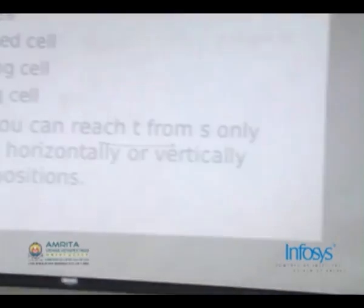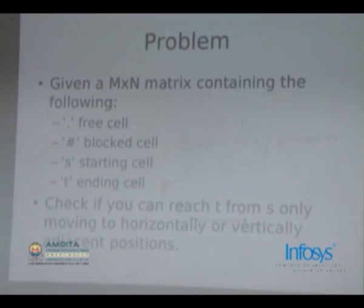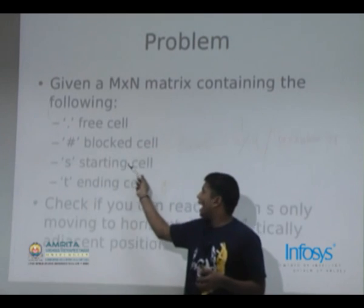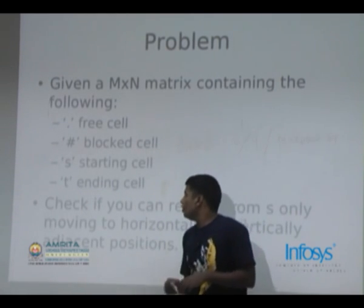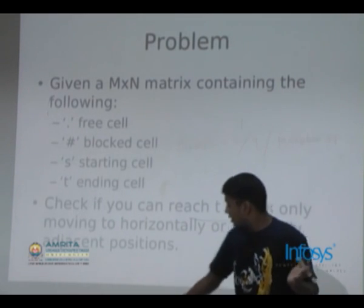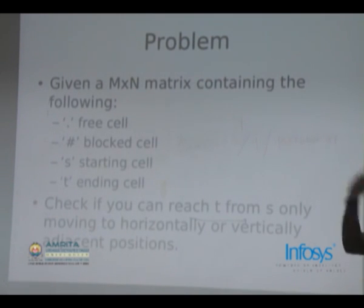Alright, we look at a very basic problem now. You are given an M cross N matrix containing, that is, where each cell could either be a dot, which means it's a free cell. A hash, which means it's a block cell. You start at cell which is marked S and you end at cell which is marked T. Now, the question is, can you reach from S to T moving horizontally or vertically? Moving to horizontally or vertically adjacent positions. That is, the movements that you make are to orthogonally adjacent cells and can you move from S to T.